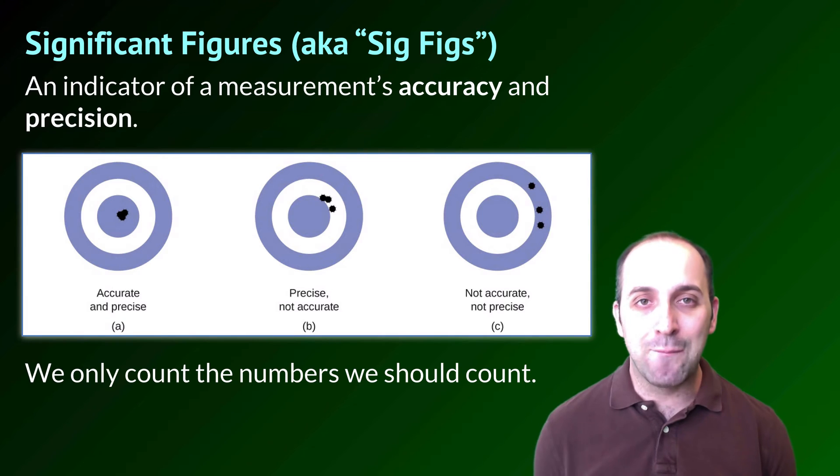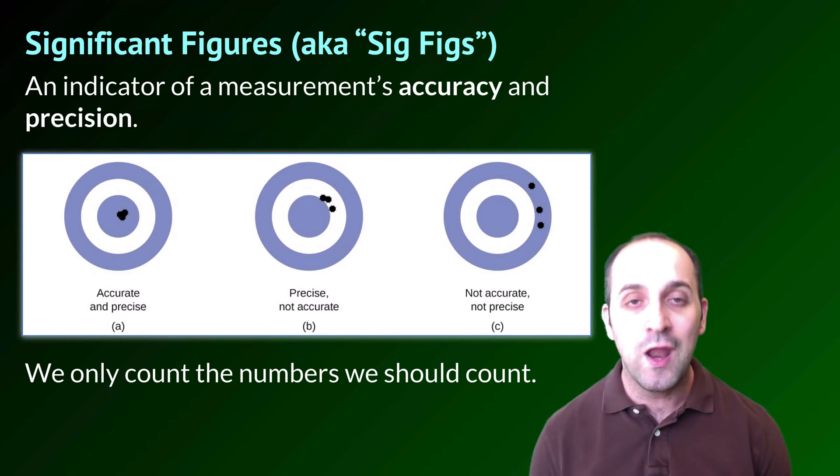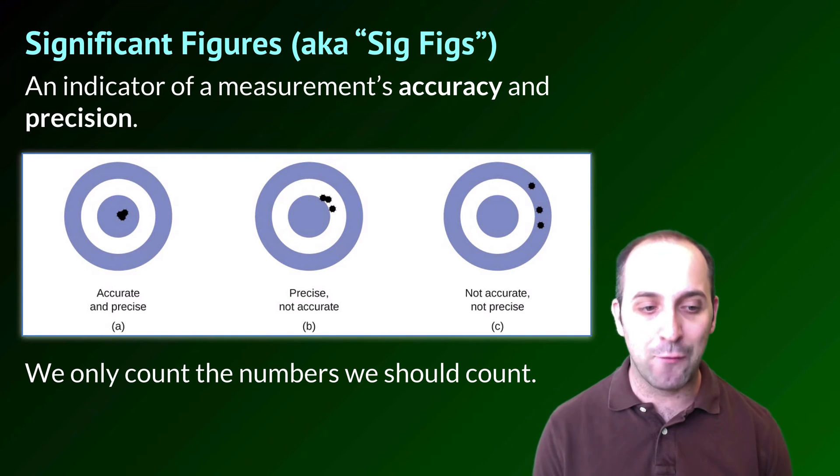And of course, you can be like me, neither accurate nor precise in your dart throwing ability, in which case your throws are going to go all over the dartboard and you're never going to hit the bullseye except by random chance.